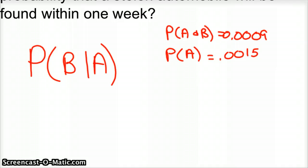And we know the probability of A is 0.0015. We also know that the formula for the probability of B given A has occurred. So what's the probability that we find the car in one week given that the car was stolen?